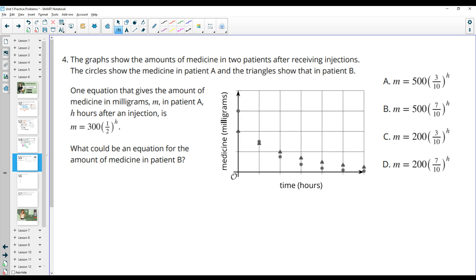Number four, the graph shows the amount of medicine in two patients after receiving injections. The circles show the medicine in patient A and the triangles show the medicine in patient B. One equation that gives the amount of medicine in milligrams M in patient A, which is the circles, is this. So here's the equation for the circles. What could be the equation for the amount of medicine in patient B? So from this original one for A, I see that the initial amount is 300. So I know that this line right here represents 300, which means that this one must be 200 and this one must be 100 for those to have the same scale or for our vertical scale.